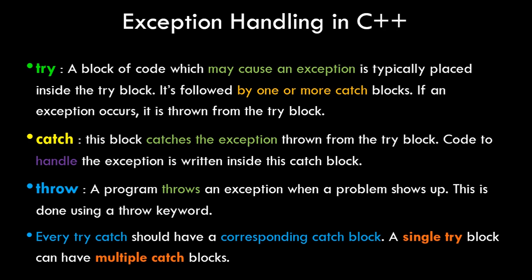Lastly, we have the throw keyword. A program throws an exception when a problem shows up, using the throw keyword. You can explicitly throw an exception — for example, a divide by zero exception, which we'll implement practically. For a certain condition where you want to throw an exception, you use the throw keyword. Also, every try block should have a corresponding catch block, and a single try block can have multiple catch blocks.